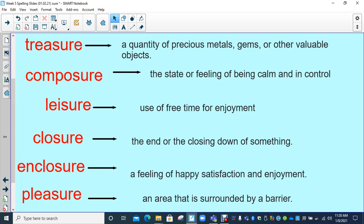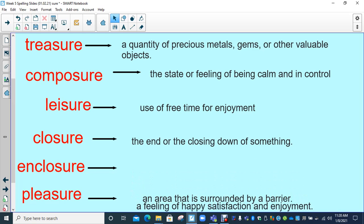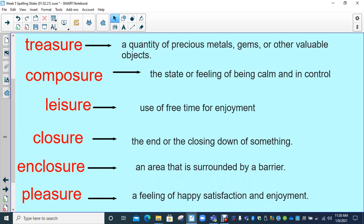Enclosure. You can think of an enclosure at the zoo. You need to have an area that is surrounded by a barrier, especially if there are lions at the zoo in that enclosure. And lastly, we've got pleasure. A feeling of happy satisfaction and enjoyment. There might be certain things which bring you lots of pleasure, a feeling of enjoyment and happy satisfaction.